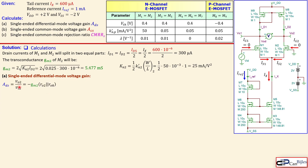For the single-ended differential mode voltage gain, we look at vo2/vid, where vid is the differential signal between the gates of M1 and M2. This is given by -gm2 times the parallel combination of the output impedances seen at that node — the output impedance of M2 and the output impedance of M8 in parallel. We need to calculate this using channel length modulation.